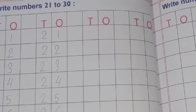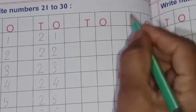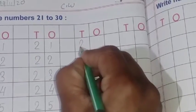So what is spelling students? 21: T-W-E-N-T-Y, twenty. O-N-E, one. 21.